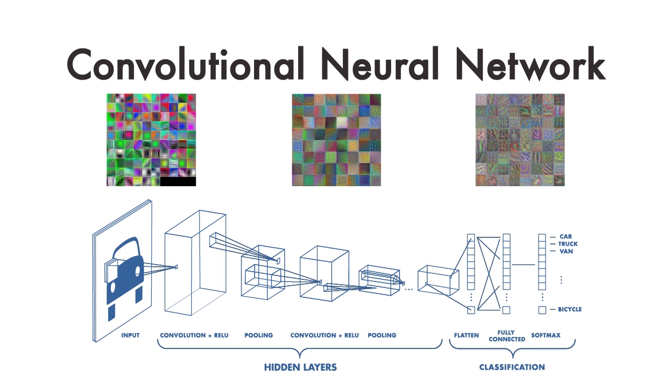In this feature map, we can see that every hidden layer increases the complexity of the learned image features. For example, the first hidden layer learns how to detect edges, and the last learns how to detect more complex shapes.